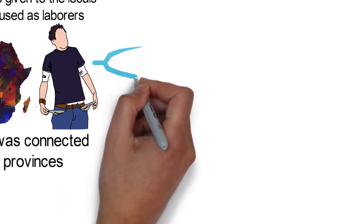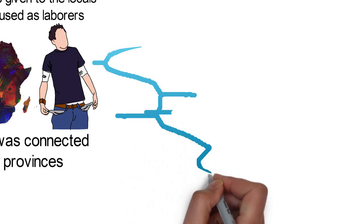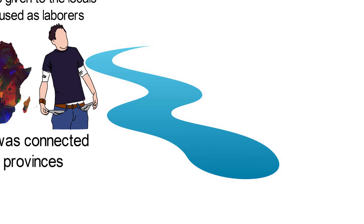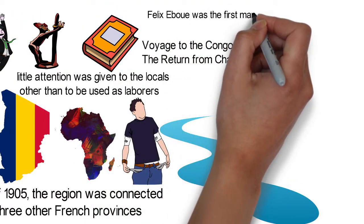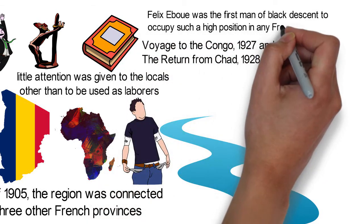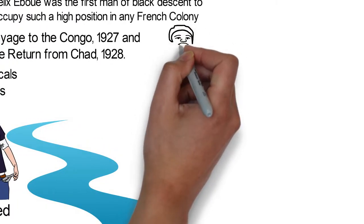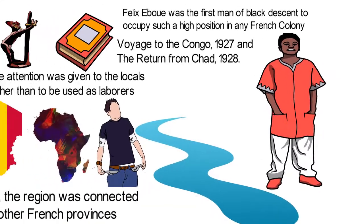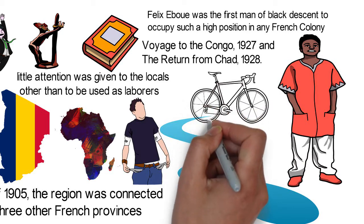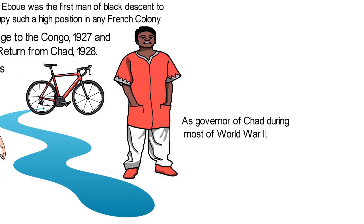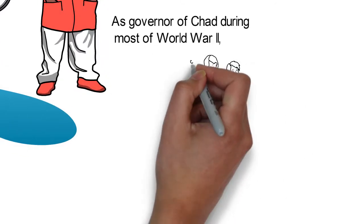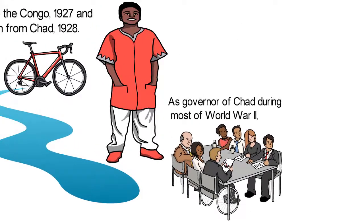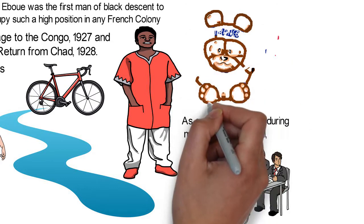Gide's revelations led to improvement in the social conditions of Africans. In 1940, Felix Eboué, an African-European born in French Guiana — an overseas region of France on the North Atlantic coast of South America — became governor of Chad. He was the first man of black descent to occupy such a high position in any French colony. Eboué had served in the French colonial administration of Ubangi-Chari for about 20 years and then in Martinique in the West Indies, before being transferred to Chad, arriving on the 4th of January 1939. As governor during most of World War II, he helped build support for Charles de Gaulle's Free French in 1940, gave support to educated Africans, placed more of them in the colonial administration, and helped to preserve African culture in the face of strong French influences.